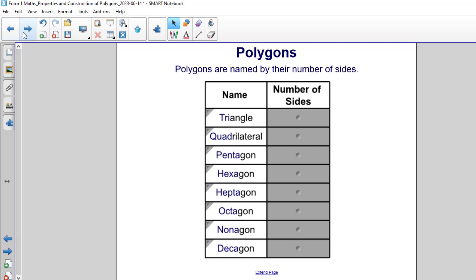Based on the number of sides we see that a triangle has three sides, a quadrilateral has four sides, a pentagon has five sides, a hexagon has six sides, a heptagon has seven sides, an octagon has eight sides, a nonagon has nine sides, and a decagon has ten sides.